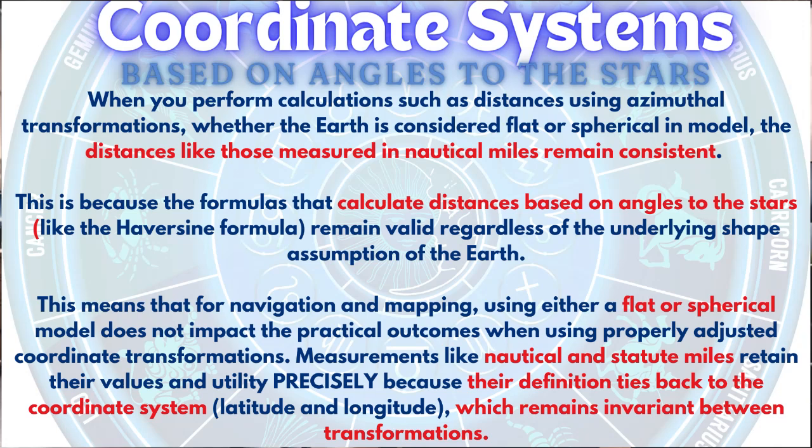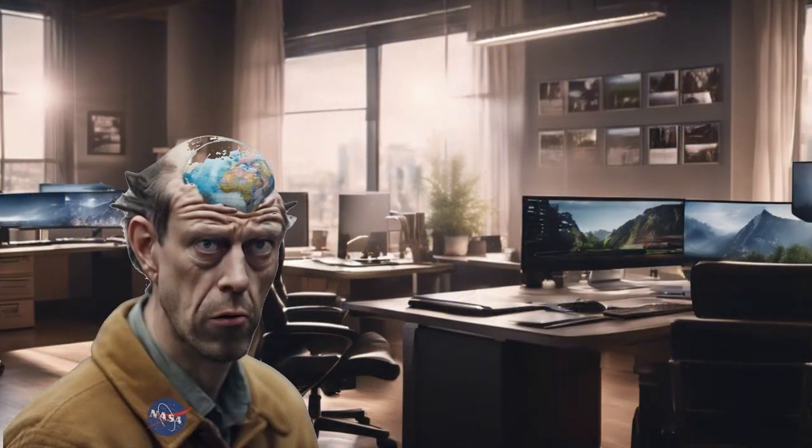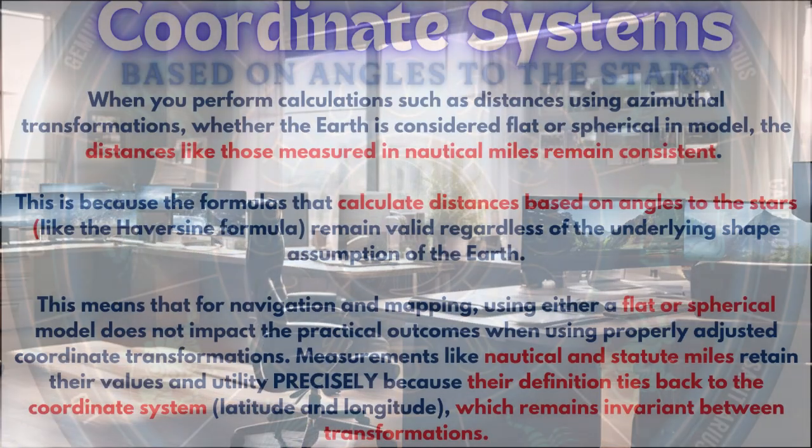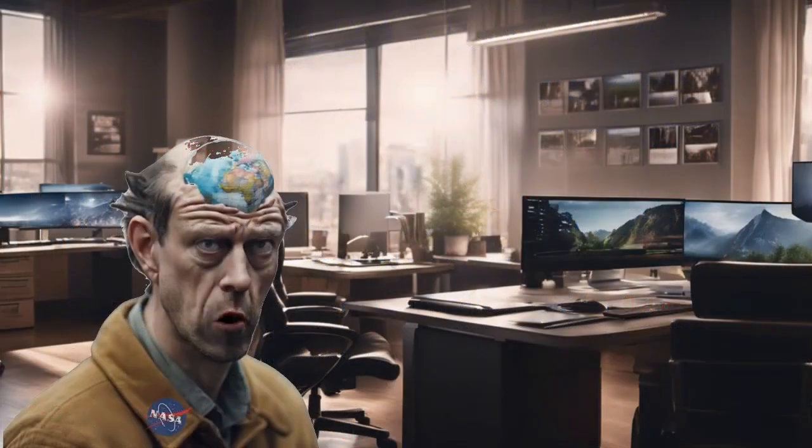So it measures the angles of the earth? No, it's measuring angles to the stars. The earth doesn't even factor into it - just the stars and how we observe them. But if it's a coordinate system, isn't it measuring the earth?